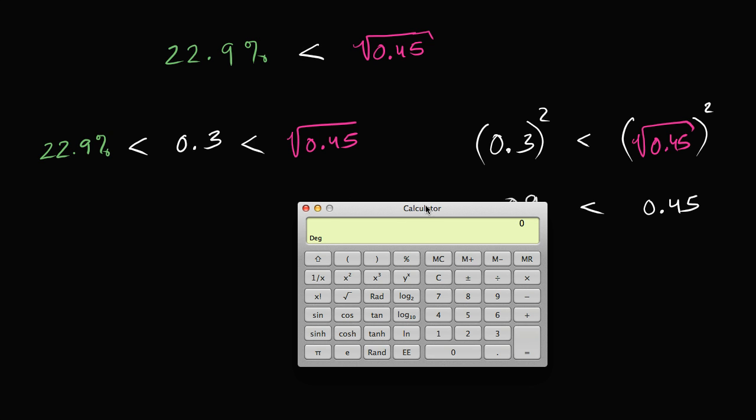Or you could do it the other way around, you could just use your calculator to calculate the square root. So you could say 0.45 and then take the square root. The square root of this value is approximately 0.67.